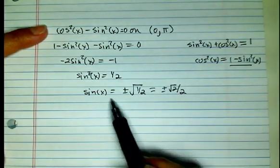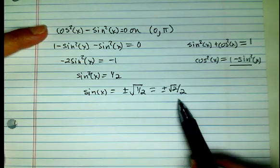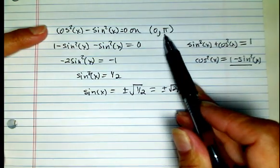Now since you all know your unit circle, you recognize that this corresponds to our pi's over 4. We're on the interval from 0 to pi.